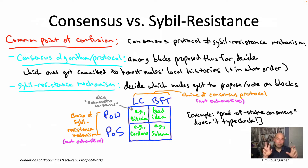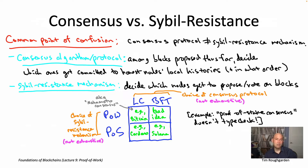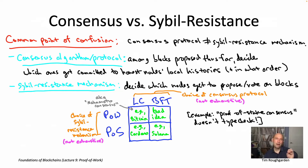Bitcoin famously uses Nakamoto consensus — that is, longest chain consensus along with proof-of-work civil resistance. Solana is a well-known blockchain using proof of stake with more or less a BFT-type consensus protocol. You don't see that many proof-of-stake longest-chain protocols, but you do see some — Cardano would be a well-known example occupying the lower-left cell. I'm unaware of any blockchain protocol in production occupying the upper-right cell, which couples proof-of-work civil resistance with BFT-type consensus.